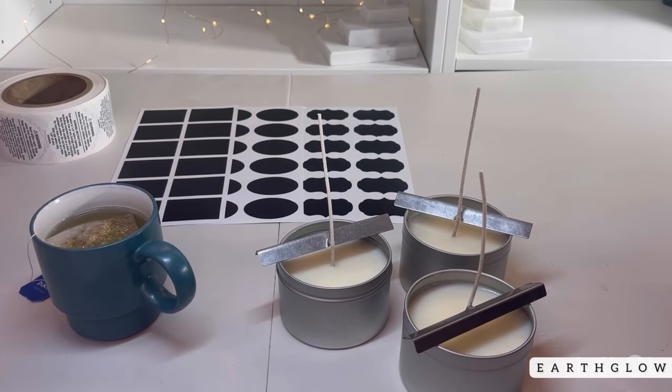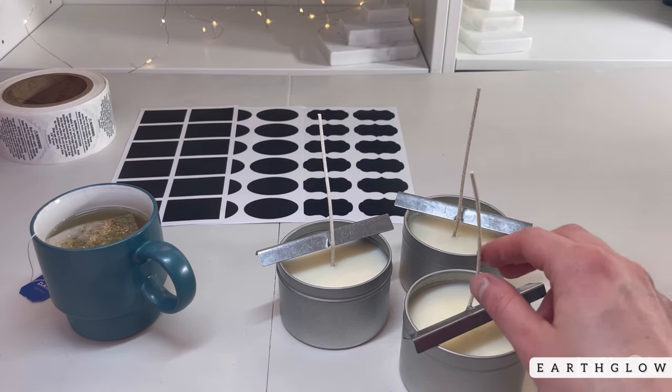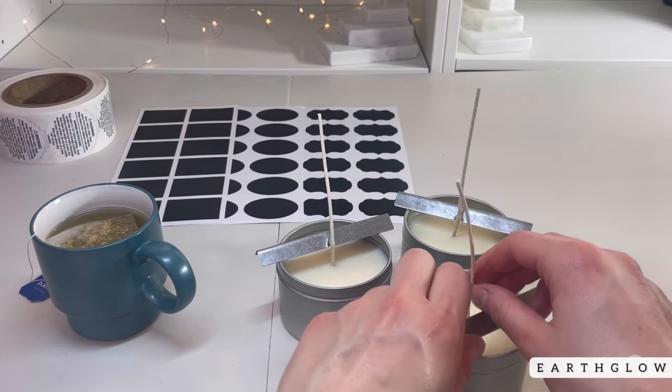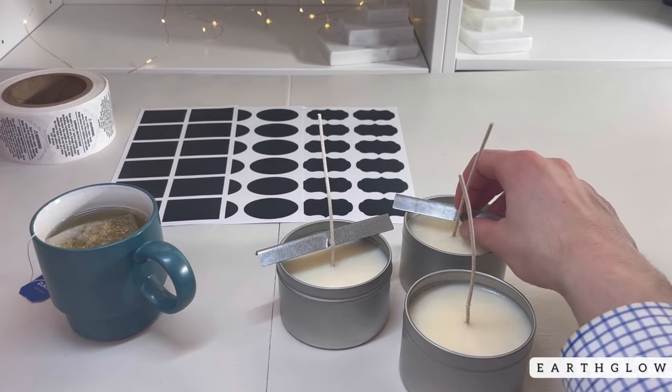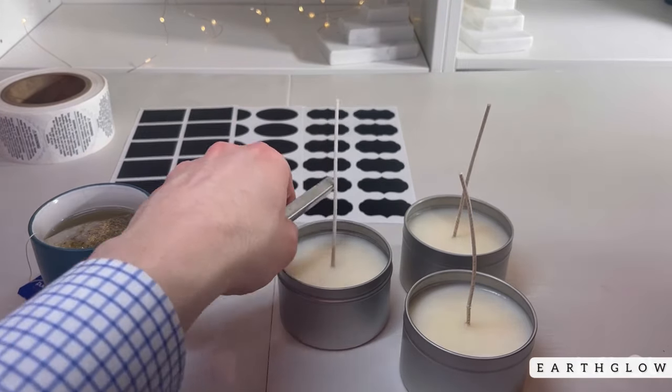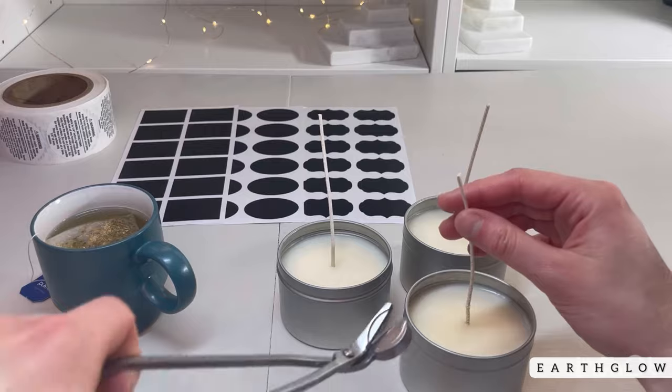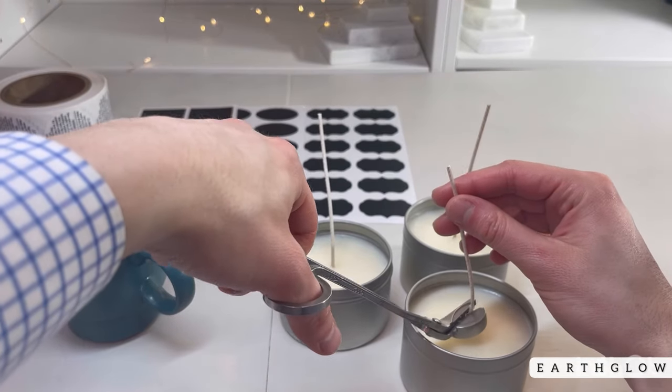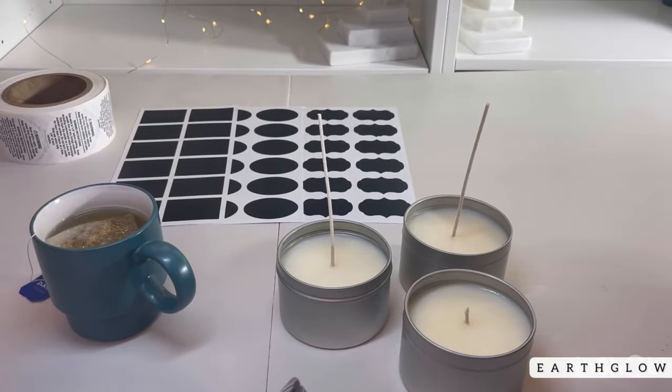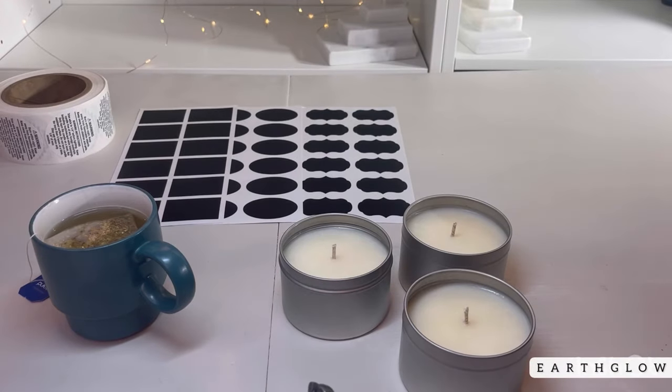Now by the magic of YouTube timing it is the next day and it's time to take our candle wick clips off of our candles. So there's nothing really special to this you just kind of remove them like so. And then you'll take your wick trimmers or you could use scissors for this as well and you'll trim these down to about I would say between about three eighths of an inch. So just about like so.